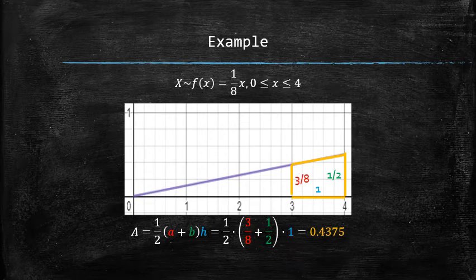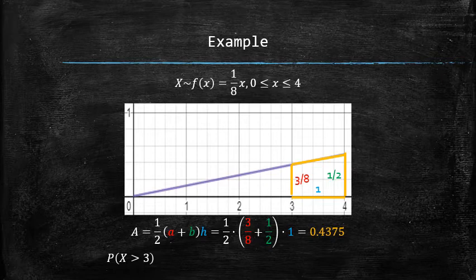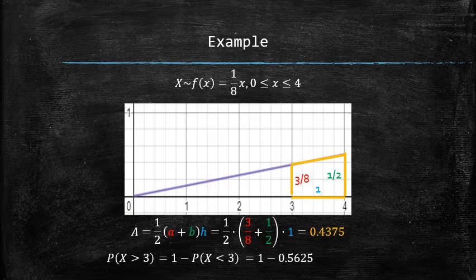Alternatively, we could have used the complementary rule to compute the same probability as 1 minus the probability of x being less than 3, which we already computed previously. So the answer is again 43.75%.